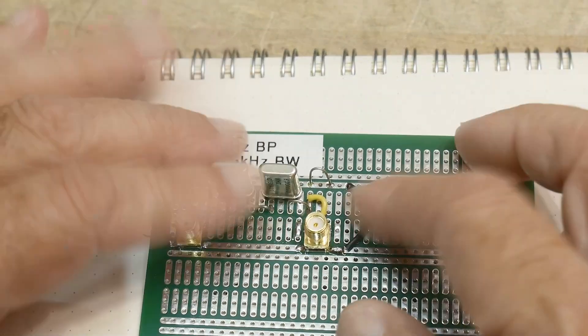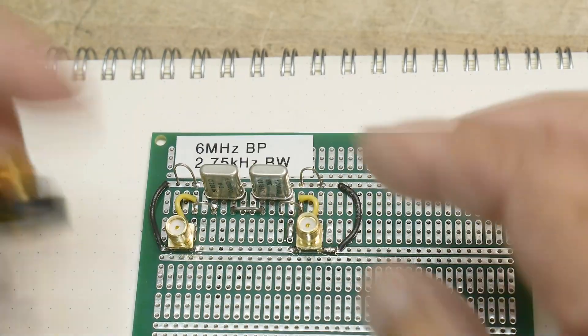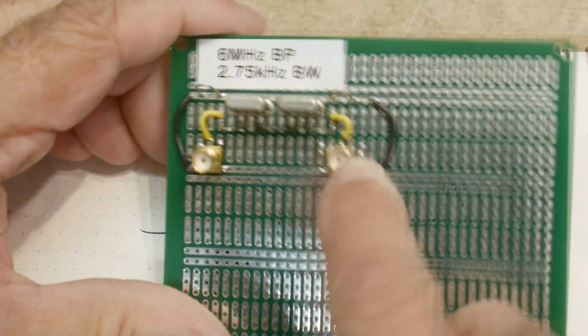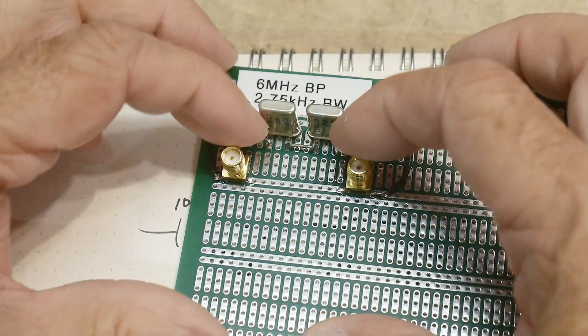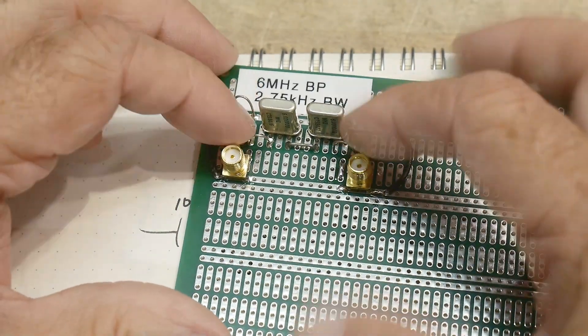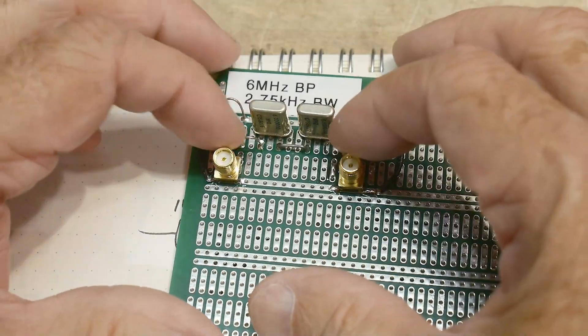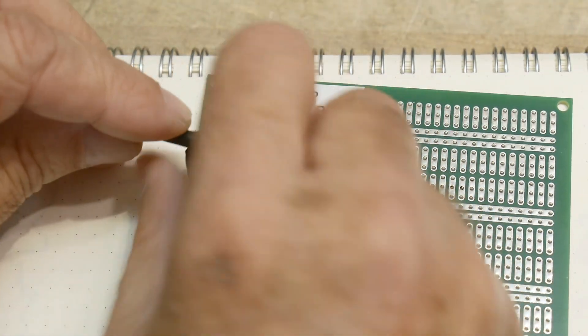Okay, so we can hook it up. I put on two SMA connectors so I can test it with a spectrum analyzer, and I put in some little wire loops here so I can clip on oscilloscope probes if I want to test it with an oscilloscope probe.